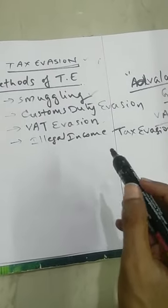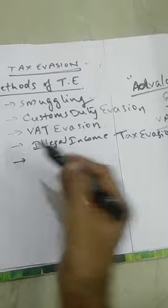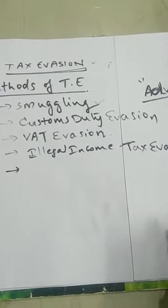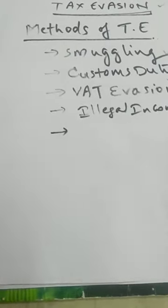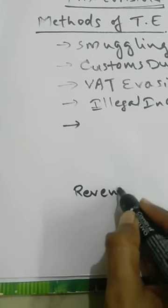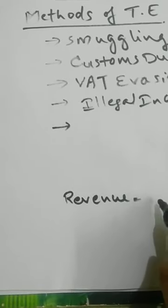This is what we call illegal income tax evasion — tax evasion done on illegal income. Now let us discuss another method. Before going to the next topic, let me write something. If you do sales, you generate revenue. The amount you get from selling a product is called revenue.